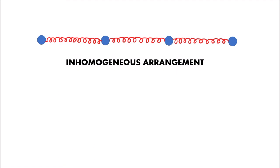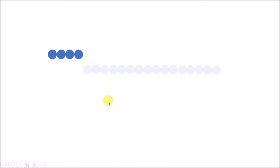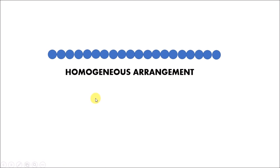A homogeneous case would be when the mass is equally distributed all along the chain. This would have been possible by removing the springs and placing the atoms side by side — as if they touch each other. In that case, the atoms form a continuous line and the mass is more or less uniformly distributed all along the chain, at least beyond atomic dimensions. But this is not a practical case, and this particular arrangement is called a homogeneous arrangement.